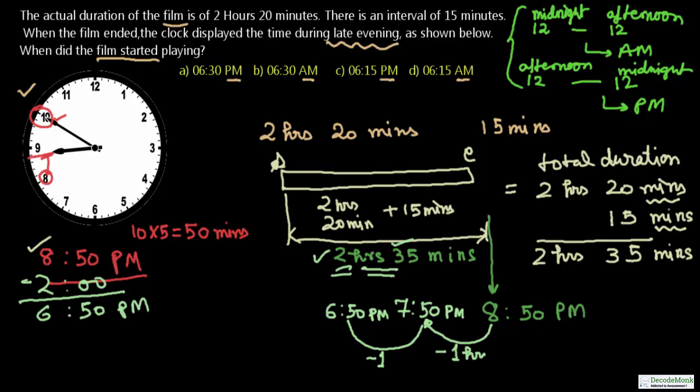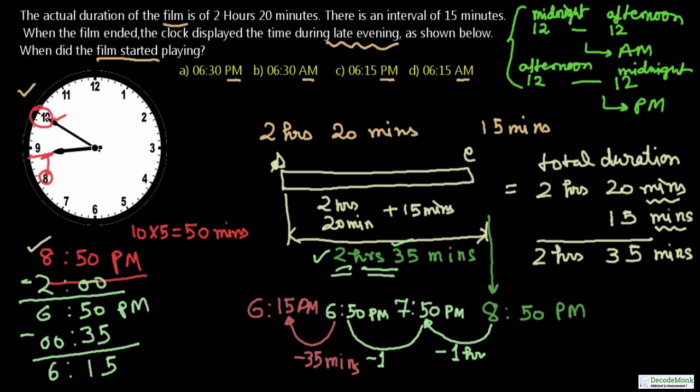We are now at 6:50 PM after subtracting 2 hours. Note that you cannot subtract hours from minutes — these are different units, which is a common mistake. Now subtracting 35 minutes from 50 minutes: 50 minus 35 equals 15. So the result is 6:15 PM.